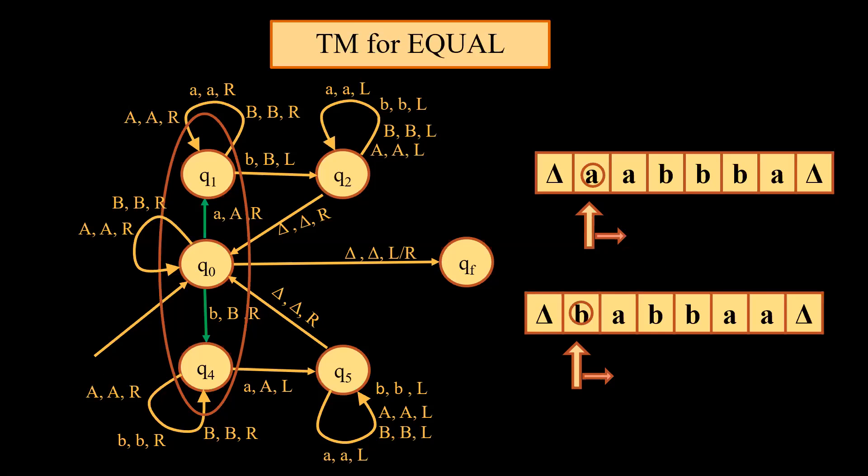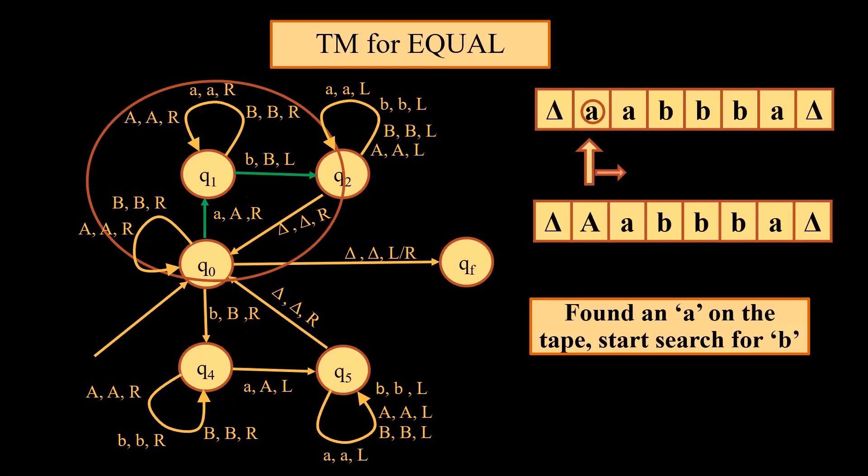Since this machine can start with A or B, from state Q0 we have two outputs: one for A and another for B. On Q1, if we come across A, we convert the first small a into capital A and move right. On the other hand, if we come across B, we convert it into capital B and move right. If we talk about this loop, whenever we come across A our objective is to find B on the tape.